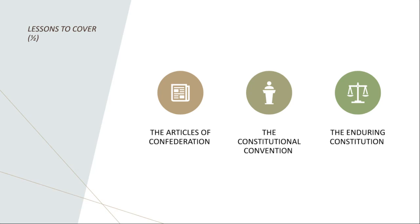Sovereignty means having the right for self-rule, where each state retained significant independence. Under the Articles, the central government had limited powers. It could conduct foreign diplomacy, maintain an army, and manage relations with Native American tribes. But it lacked the authority to tax or regulate commerce effectively, and this led to numerous problems.